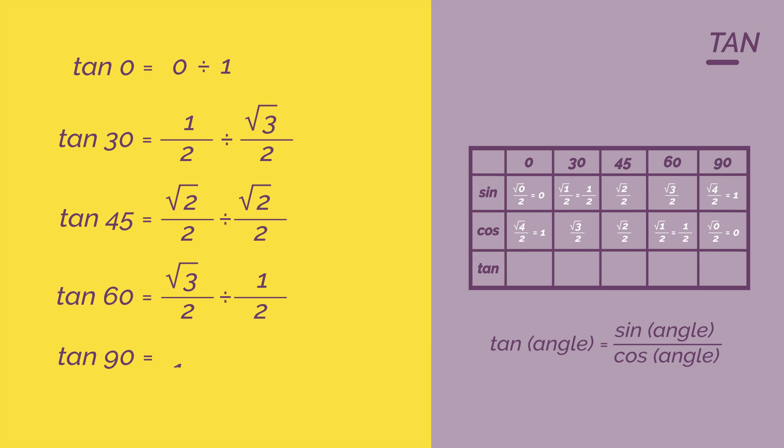And tan 90 is one divided by zero. So we can cancel these down. Tan of zero would be zero. 30 would be one divided by root three. 45 is just one. 60 is root three.